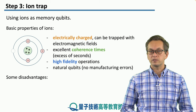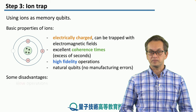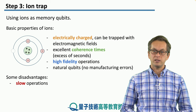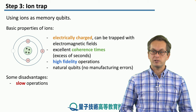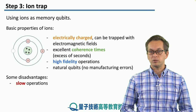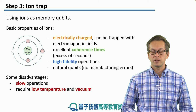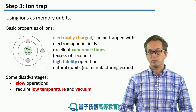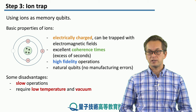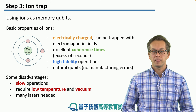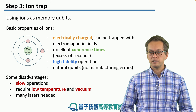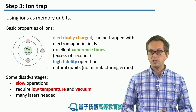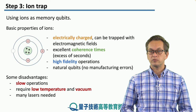There are however some disadvantages that go along with these advantages. The operations are high fidelity, but at the same time they're extremely slow when compared to other quantum technologies. We require low temperatures and vacuum in order to achieve these high fidelities. And also the experimental setup gets quite complex with the size of the ion trap because we will need a lot of lasers.